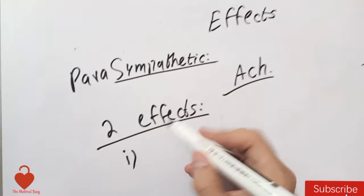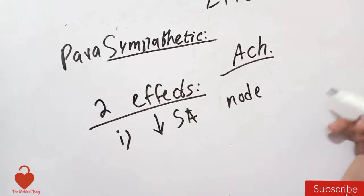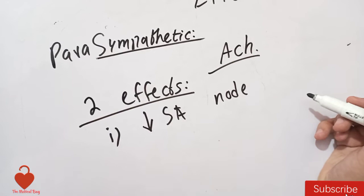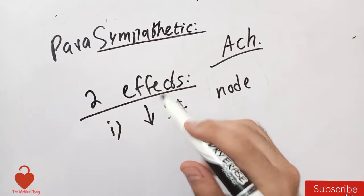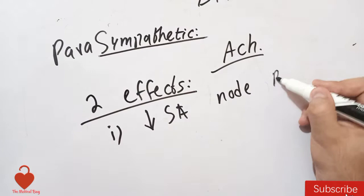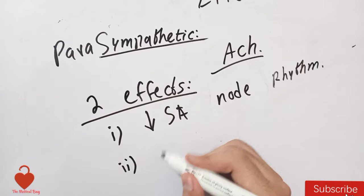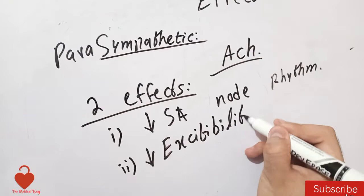For example, if the SA node was firing at a rate of 100 beats per minute, it will now be firing at a rate of 70 or 60 beats per minute. The parasympathetic innervation decreases the SA node rhythm. The second effect, which is very important, is that it decreases the excitability of the atrial junctional fibers.